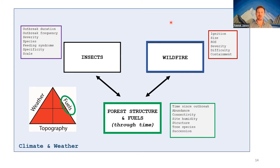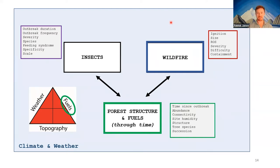This is the framework we're currently working in, trying to dissect the ways in which forced insect outbreaks might influence wildfire. Next, I have a few current projects led by graduate students and postdocs in the lab that I'll summarize. The first is work on a mountain pine beetle-fire scoping review, really squaring up to the problem of the lack of consensus among research results in the literature.